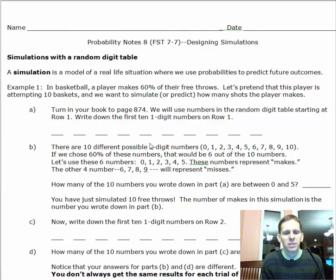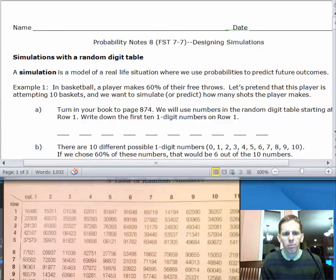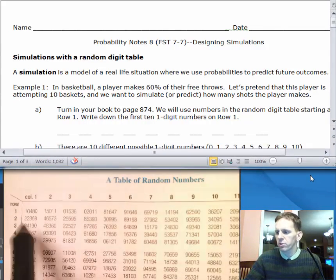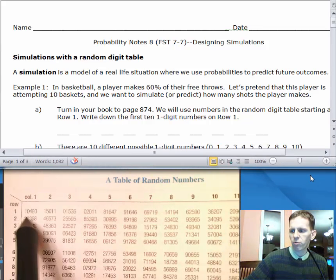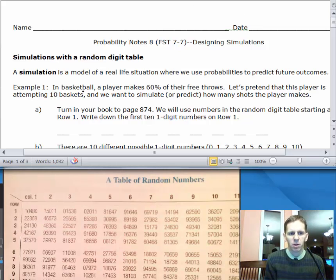We're going to use the table on page 874, so we're going to use our table handout. Our table looks a little bit like this. You can see we've got a whole bunch of random numbers. We're going to use numbers in the random digit table starting at row 1, which is right here. We're going to write down the first 10 numbers of that particular row. In our table here, those numbers are 1, 0, 4, 8, 0, 1, 5, 0, 1, 1. I'm just re-copying the first 10 numbers on that table in order.